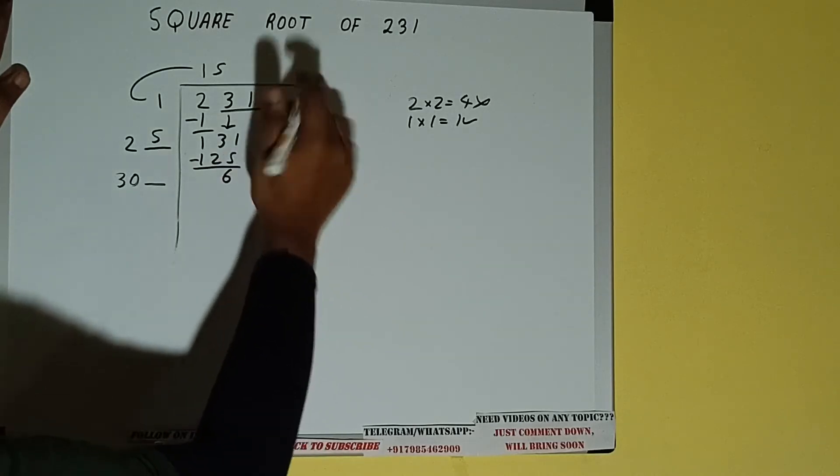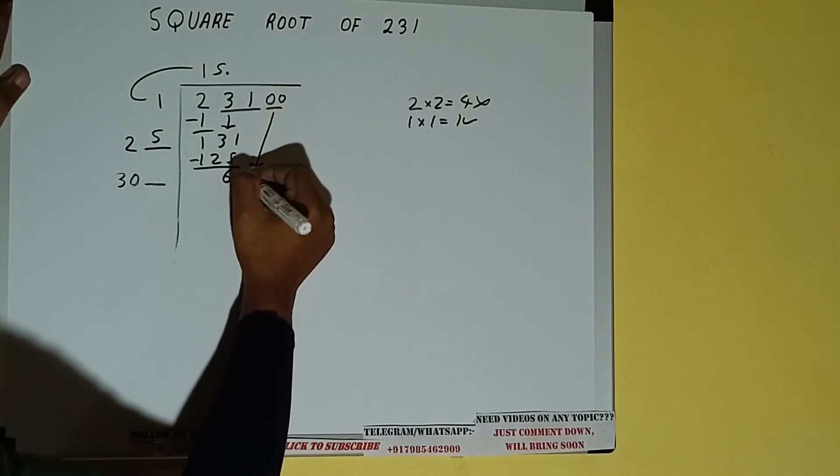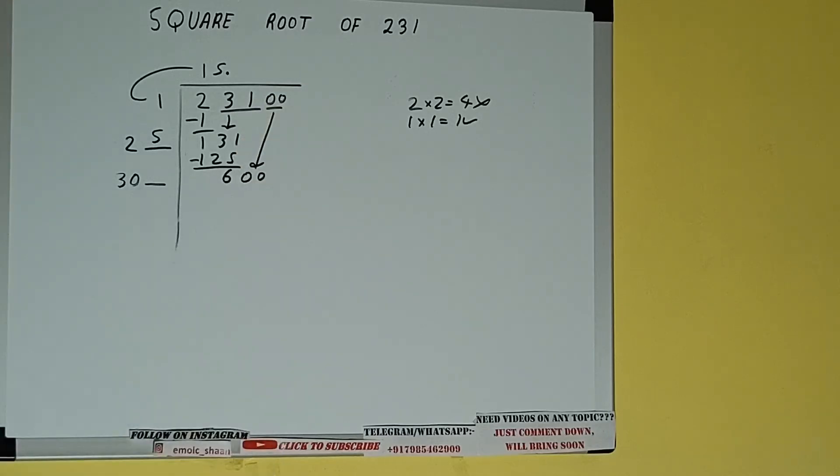But we don't have more pairs, so we'll put decimal. Once we put decimal, we can bring pair of zeros down, and the number will be 600.